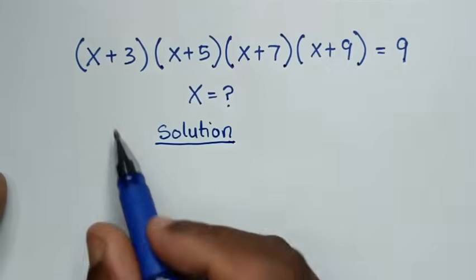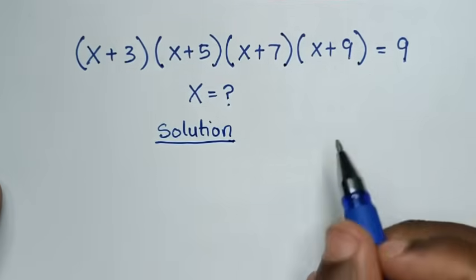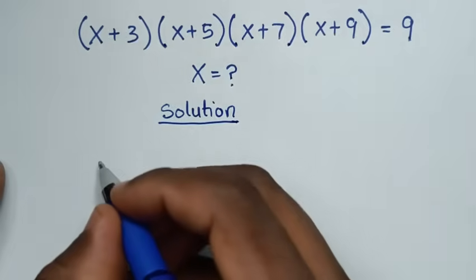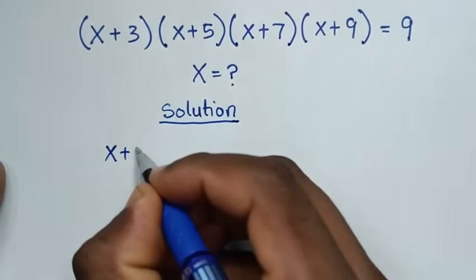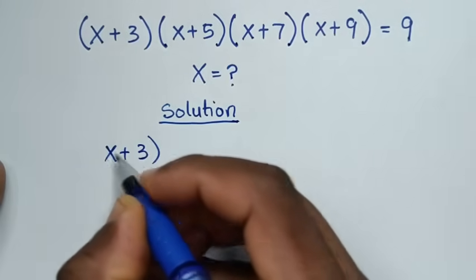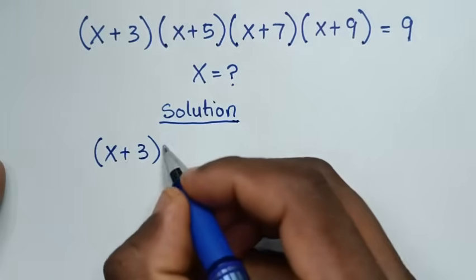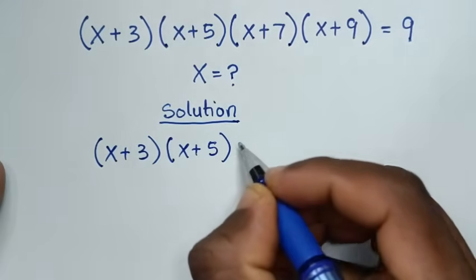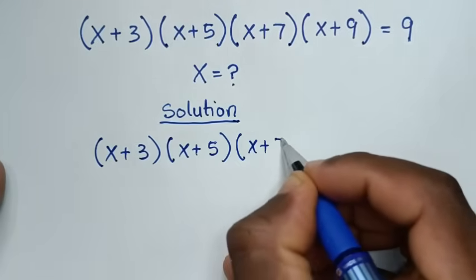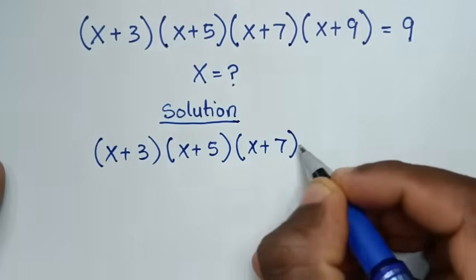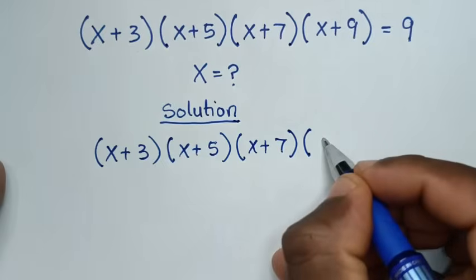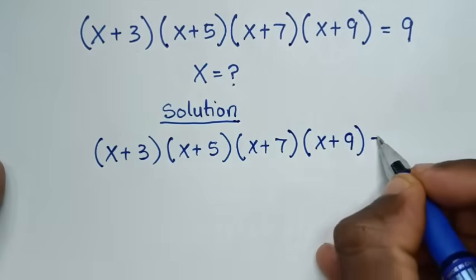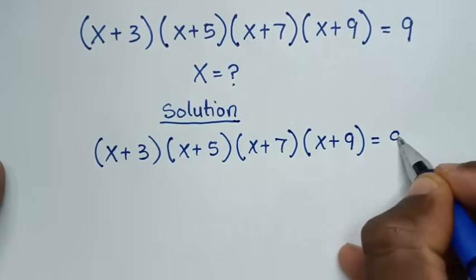To solve this problem, we have two methods. In the first method, our problem is (x+3)(x+5)(x+7)(x+9) = 9.